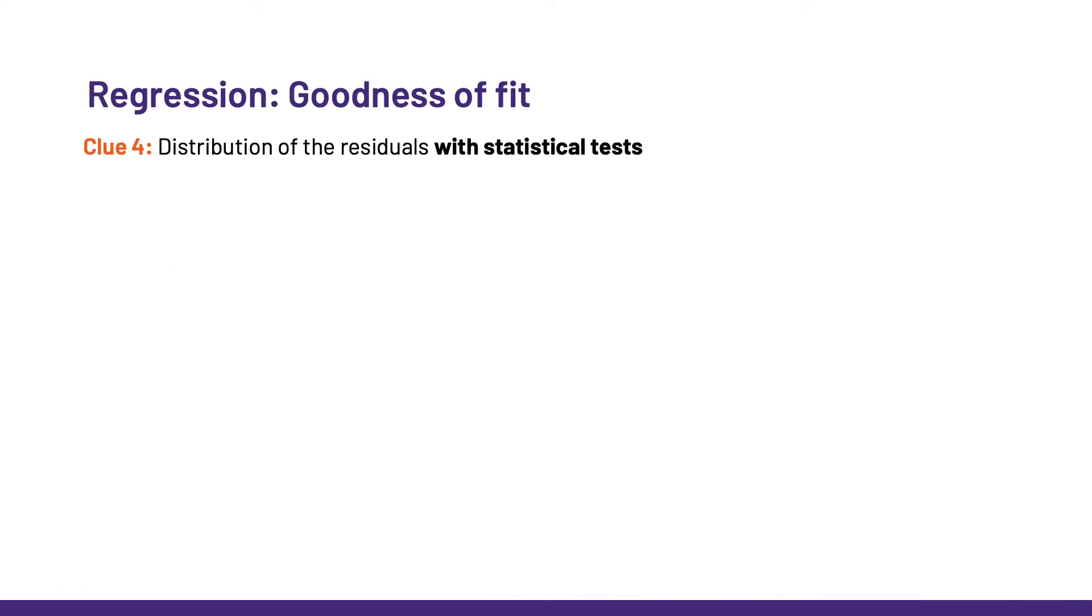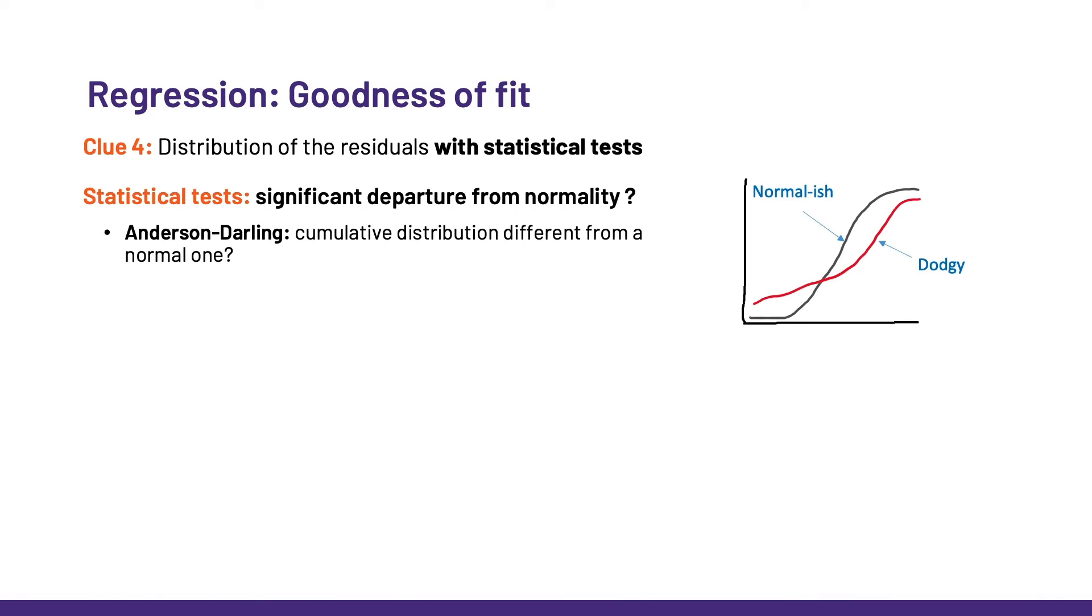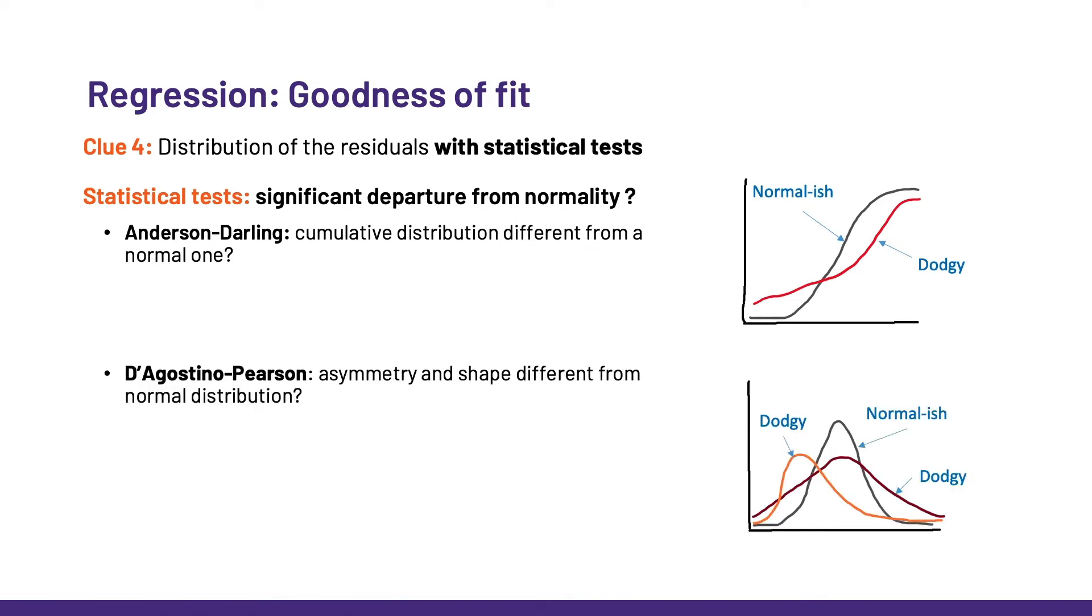So first, we can check for normality using statistical tests. They can tell us if there is or not a significant departure from normality. So there is the Anderson-Darling test, which compares the cumulative distribution of our data—here the residuals—with a normal one. Or there is the D'Agostino-Pearson test, which compares asymmetry and shape between the distribution of the residuals and a normal distribution. There are other tests like the Shapiro-Wilk or the Kolmogorov-Smirnov test, for instance, but they are more complex to understand or obsolete and, in any case, not more informative.